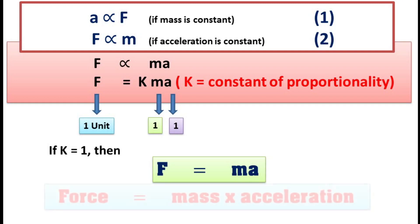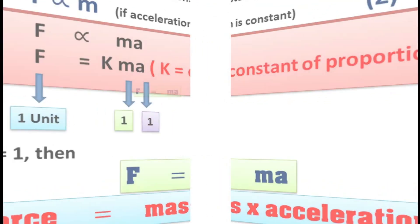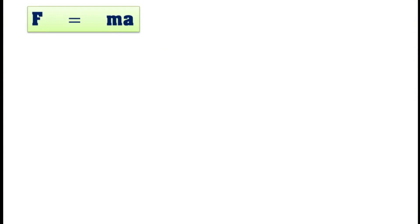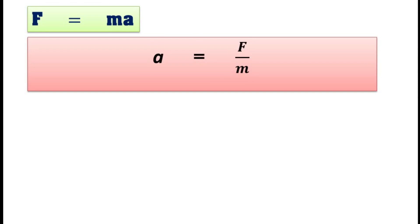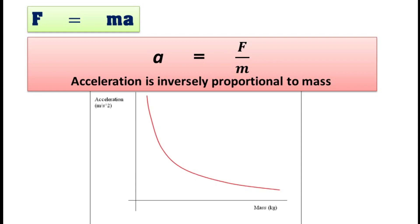If k is equal to 1, then the formula becomes F is equal to MA, or force is equal to mass into acceleration. Write this as equation number three — this is the mathematical expression of Newton's second law of motion. If we rearrange for acceleration, then A is equal to F divided by M. You can see that acceleration is inversely proportional to mass, and if we plot a graph for acceleration A against mass M, it will be a curved line or hyperbola, as shown in the diagram.